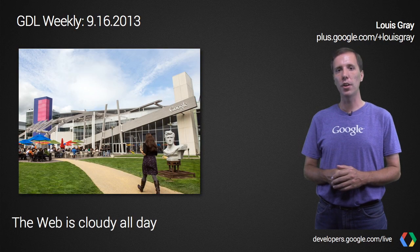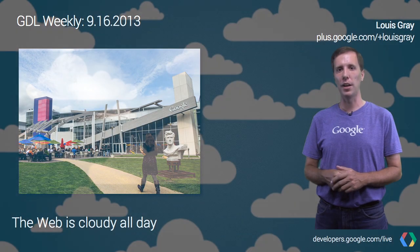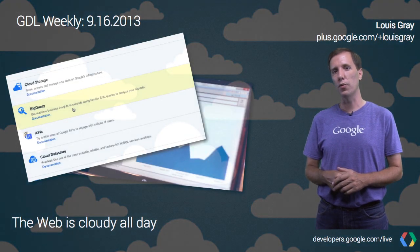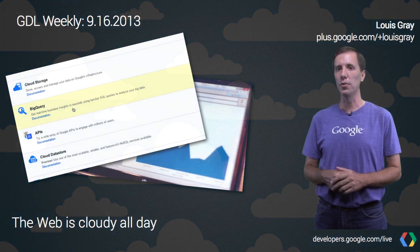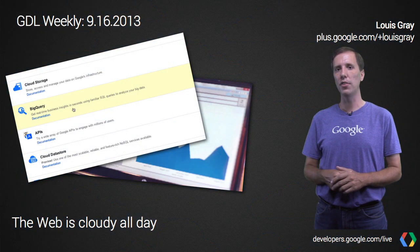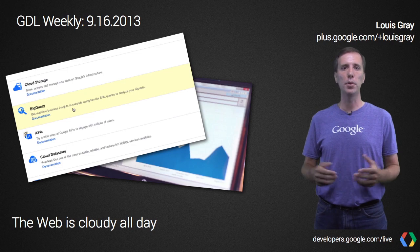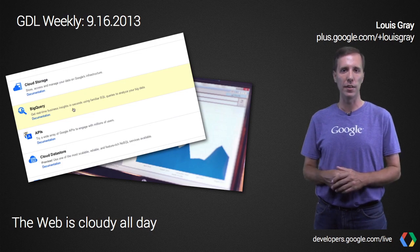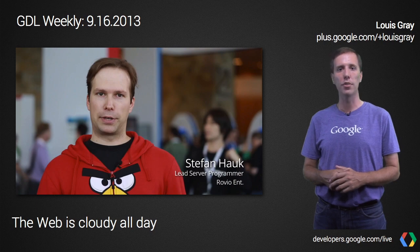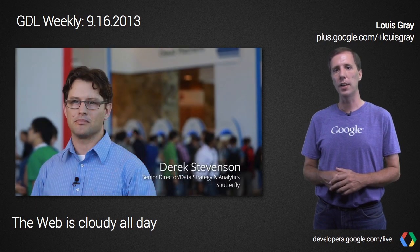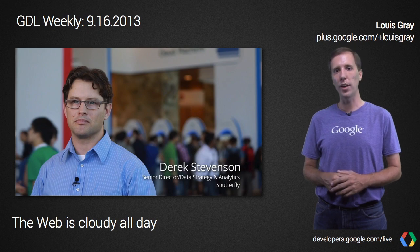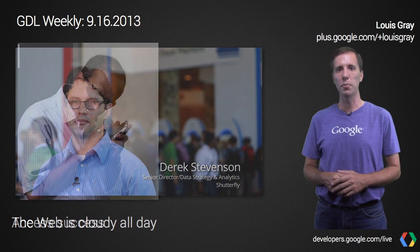While the weather here in sunny Mountain View has been pleasant, our GDL studios were dominated by clouds last week. Google's cloud platform team delivered four separate videos for Cumulus and Stratus aficionados, starting with the core benefits of the platform, including rapid compute scaling and large-scale data analytics. The video series also includes case studies from companies like Rovio and Shutterfly, showing how they can easily deploy complex infrastructure and reduce latency while scaling to meet spikes in user demand.